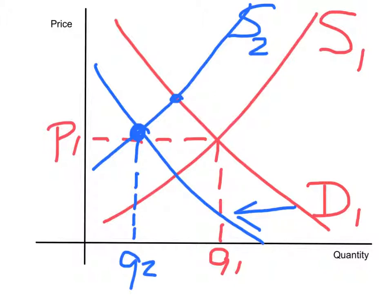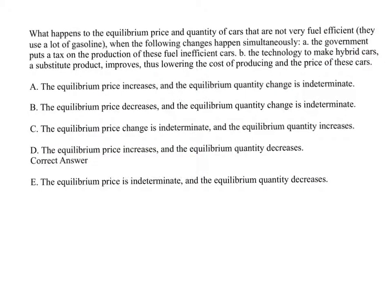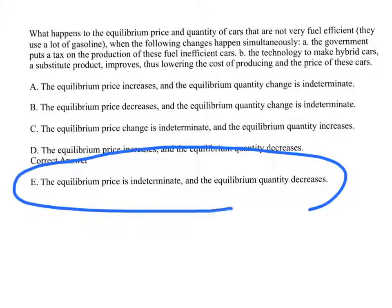So the equilibrium quantity has definitely decreased — that's part of our answer. As for the price, it looks like the price has stayed about the same. But depending on how far each curve is shifted, the price could be lower or a little higher. So the official answer for the change in equilibrium price is that it's unknown — it's indeterminate. That means choice E is the correct answer. Thank you.